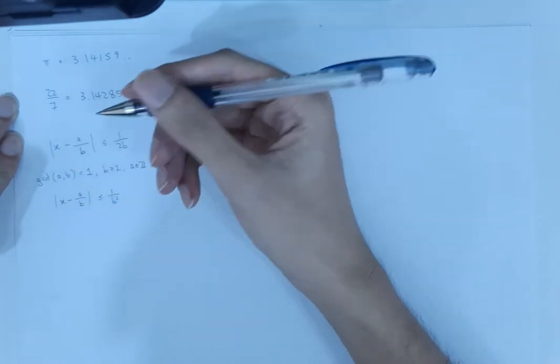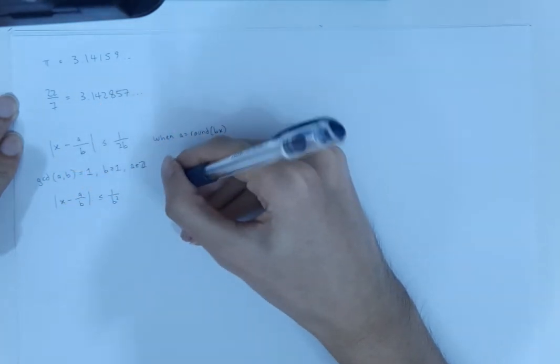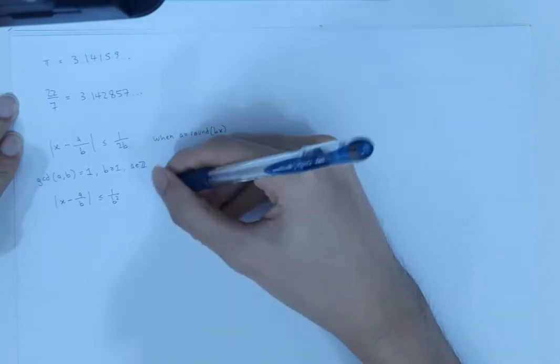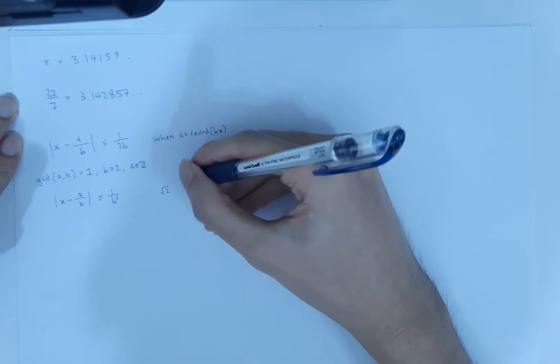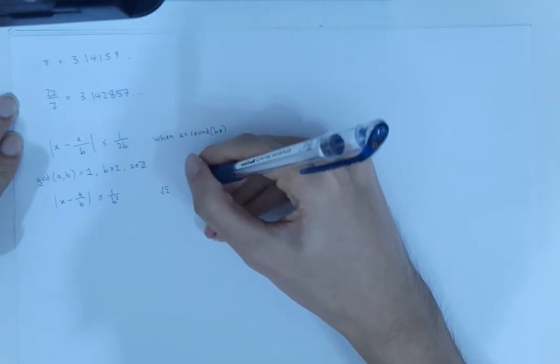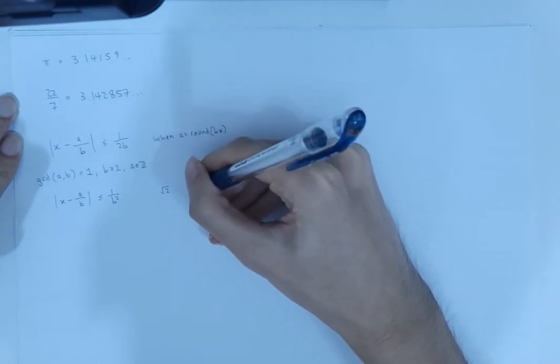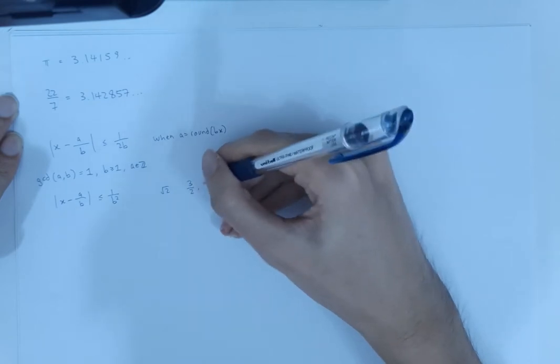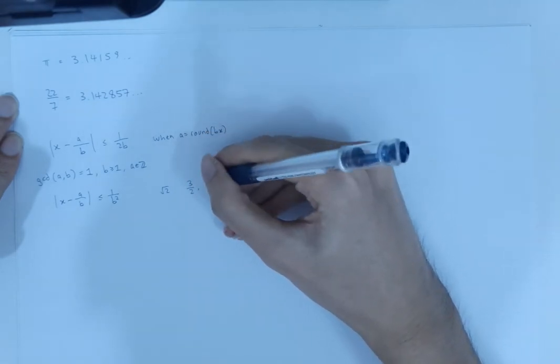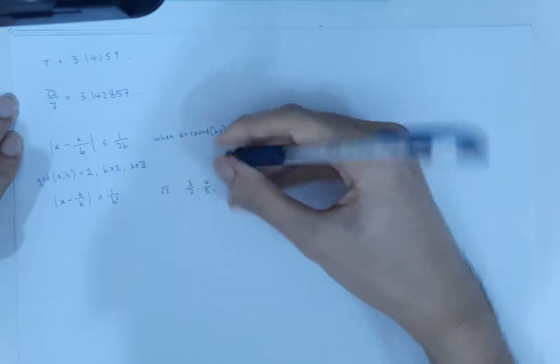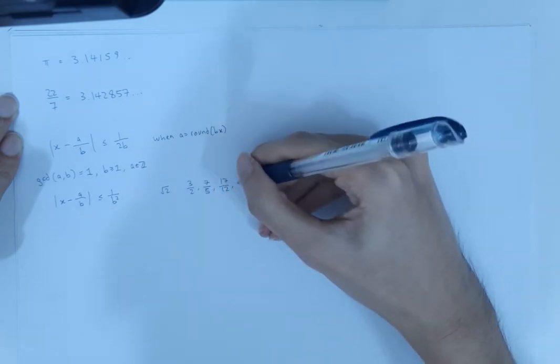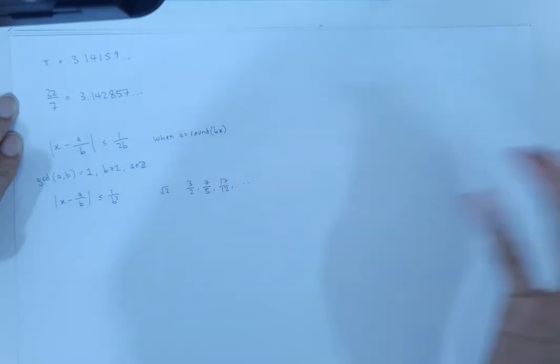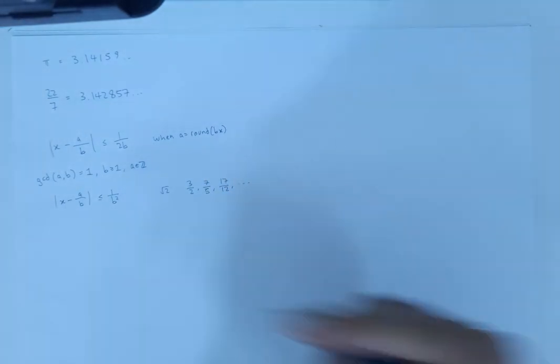So for example, if we take square root of 2, then it has the rational approximations that satisfy this criterion of 3 over 2, I believe, 7 over 5, 17 over 12, and so on. 41 over 29, 99 over 70, etc.